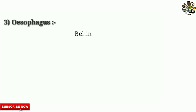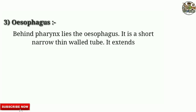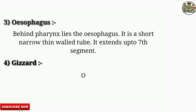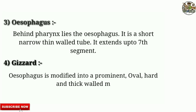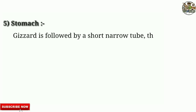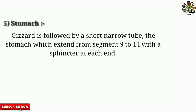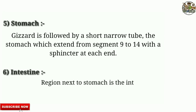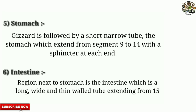Behind the pharynx lies the oesophagus — a short, narrow, thin-walled tube extending up to the 7th segment. The oesophagus is modified into a prominent, oval, hard, thick-walled muscular organ: the gizzard, lying in the 8th segment. The gizzard is followed by a short narrow tube, the stomach, which extends from segment 9 to 14 with sphincters at each end. Next is the intestine — a long, wide, thin-walled tube extending from the 15th segment to the last.